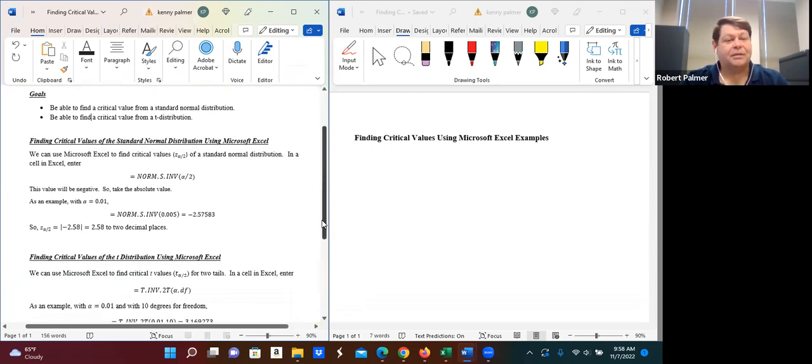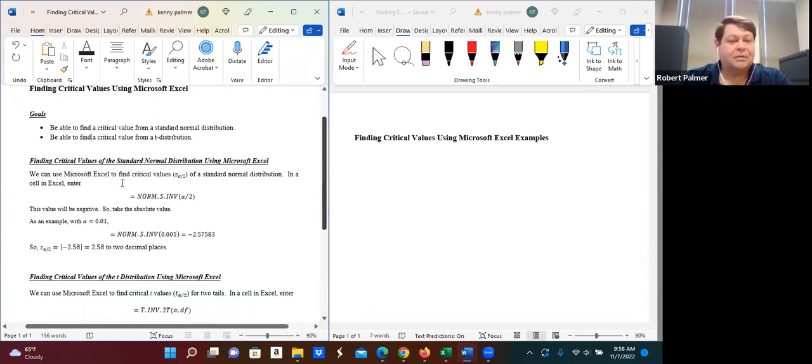First, let's talk about finding the critical values from the standard normal distribution, or Z of alpha over 2. We can use Excel to find these. So what we're going to enter is this function right here.